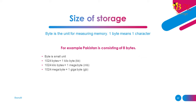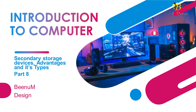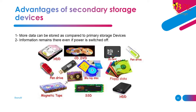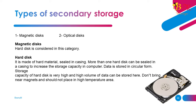Part 8: Secondary Storage Devices. Why is secondary storage needed? RAM stores information temporarily, and we cannot write to ROM, so we need a place to store information even when the computer is off. Secondary storage is also called non-volatile storage. Examples: USB discs, hard discs, compact discs, magnetic discs, etc. Advantages: more data can be stored compared to primary storage, and information remains even if power is switched off. Types: 1. Magnetic discs, 2. Optical discs.